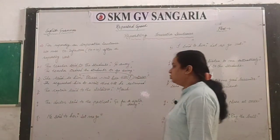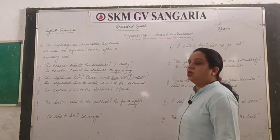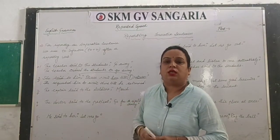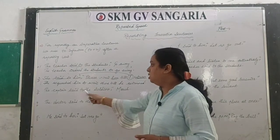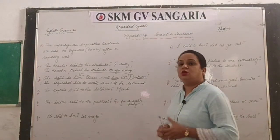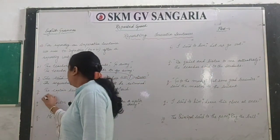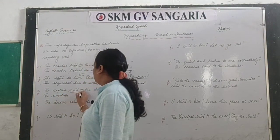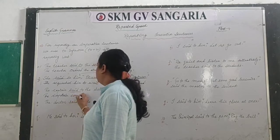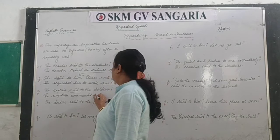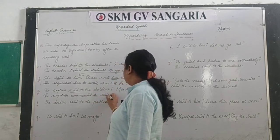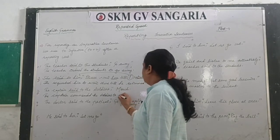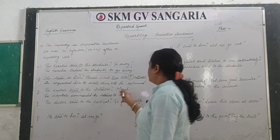The captain said to the soldiers, march. The captain is giving a command, so 'said to' changes to 'commanded'. We attach 'to plus verb first': the captain commanded the soldiers to march. Note that 'march' here is a verb meaning to walk fast — not the name of a month — so we write it in lowercase.